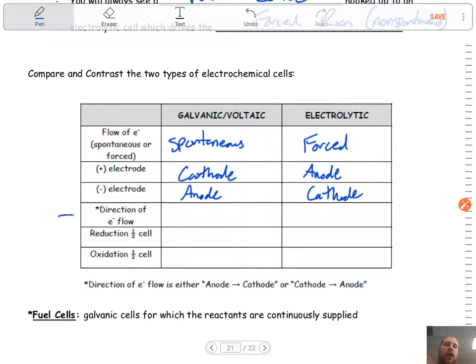Now, notice there's a star next to this one, guys. Star it yourself. Remember this. The direction of the electron flow doesn't change. Electrons are always going from the anode to the cathode. It doesn't matter which cell. They always go anode to cathode.